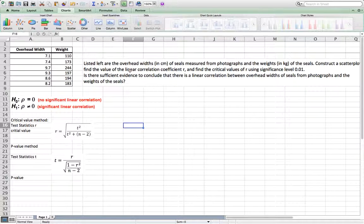Listed left are the overhead widths in cm of seals measured from photographs and the weights in kg of seals. Construct a scatter plot, find the value of the linear correlation coefficient, and find the critical value of r using significance level 0.01. Is there sufficient evidence to conclude that there is a linear correlation between the overhead widths of seals from the photograph and the weight of the seals? So let us do it step by step.